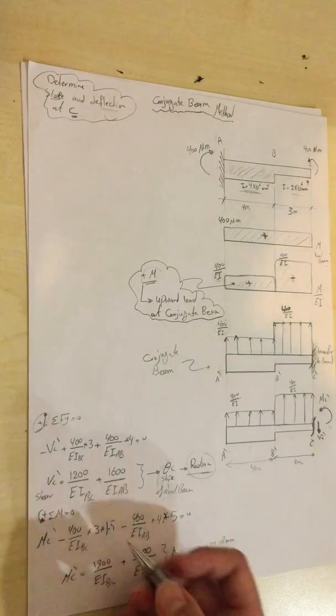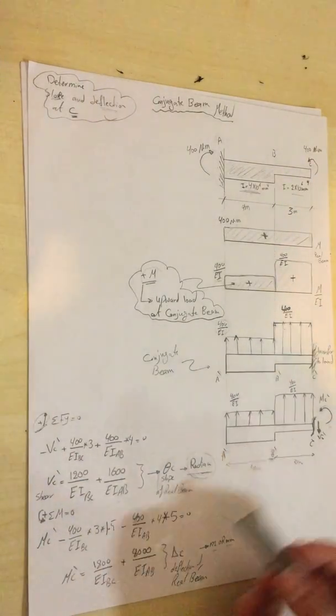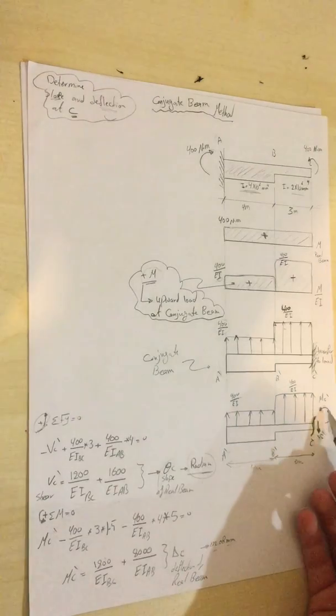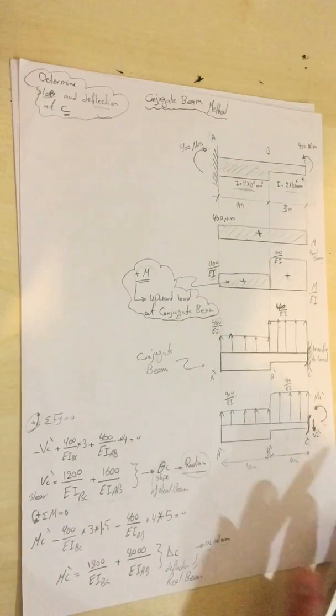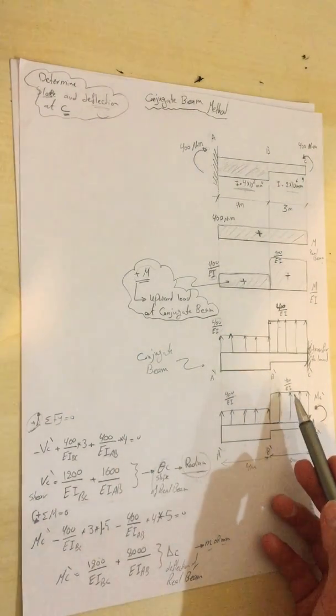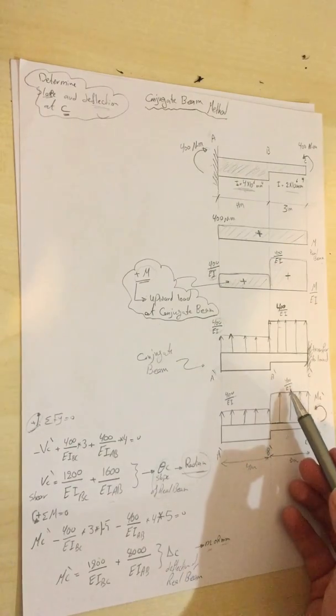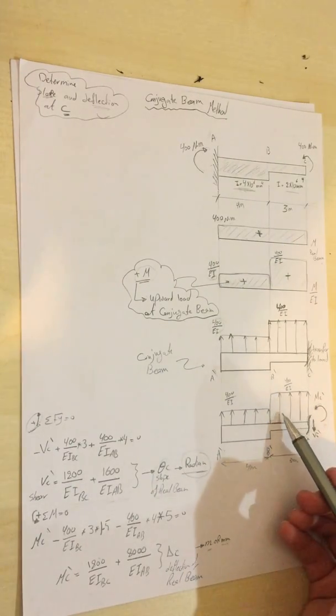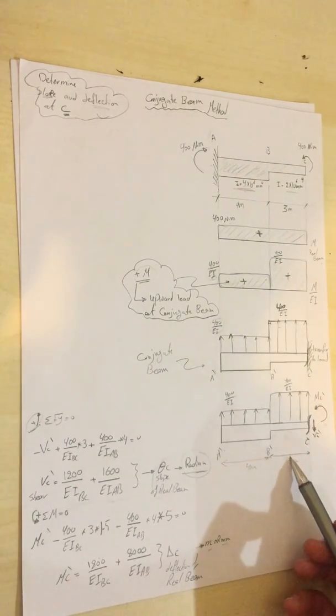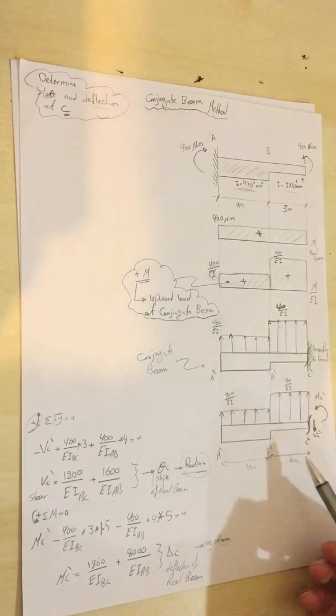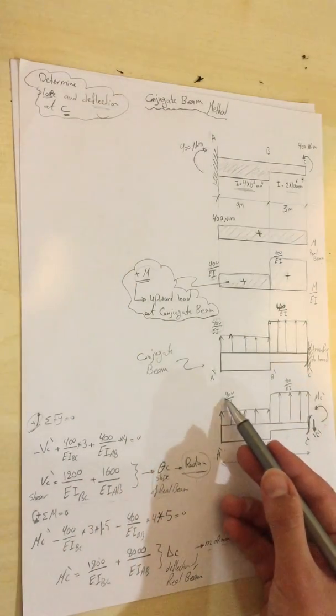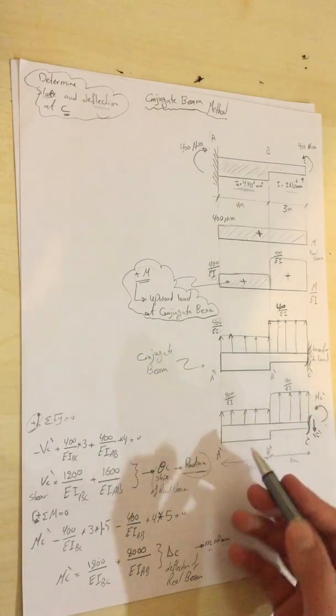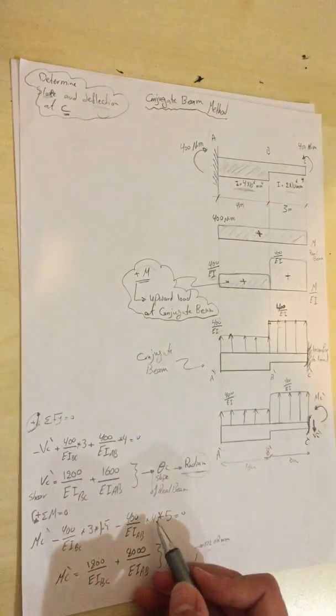I will get Mc dash for this section. Mc dash minus 400 divided by EI of segment BC times 3 times the distance which is 1.5, minus 400 divided by EI of segment AB times 4, the length of the segment.